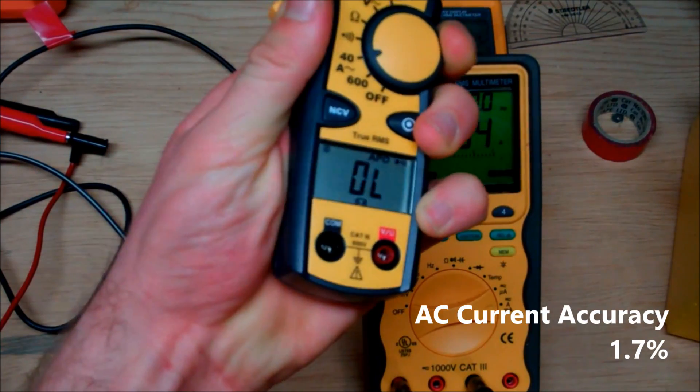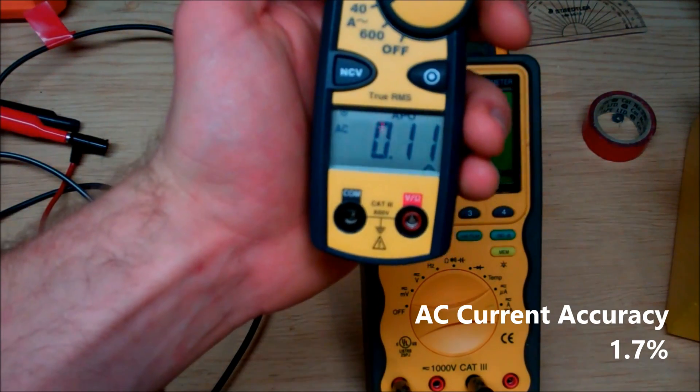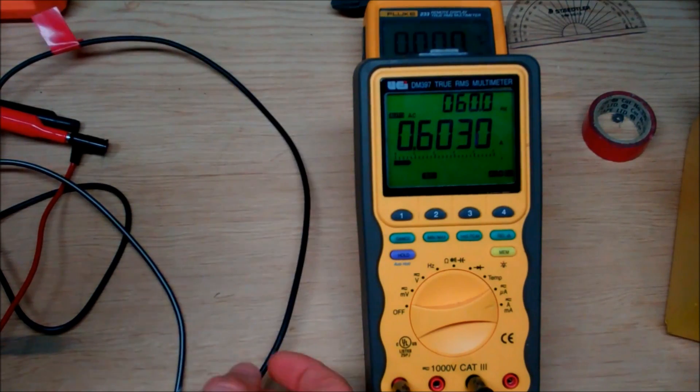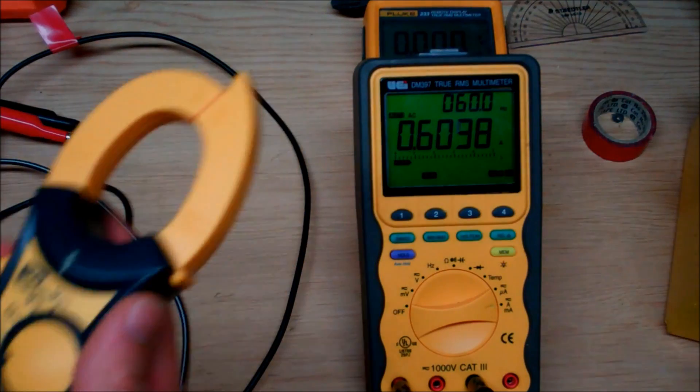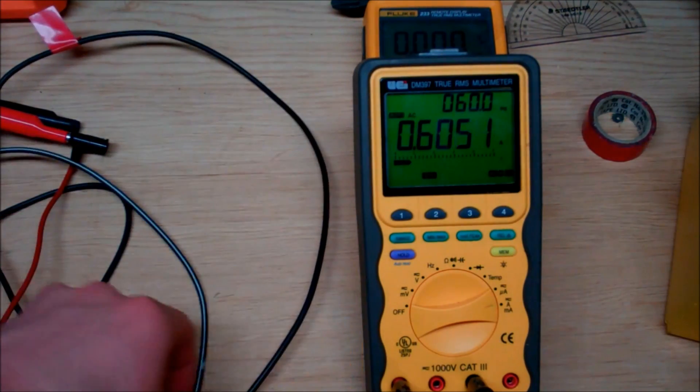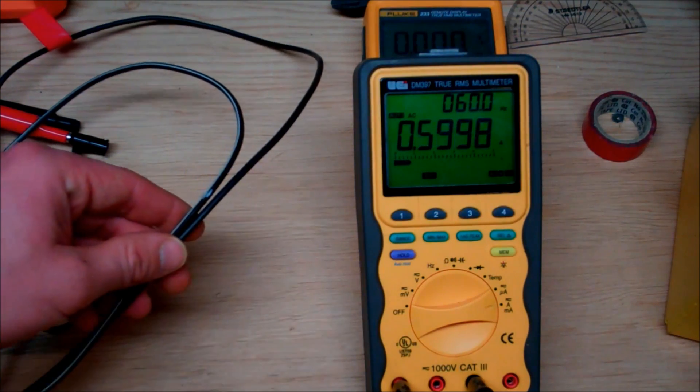Now as we scroll to our next function, we have the ability to measure current for a range of 40 amps and 600 amps. What I have here is an isolated power supply line going to my AC to DC converter from my laptop. Once again, this is isolated because if you measure both, you won't establish a reading because you have two currents and they cancel each other out.